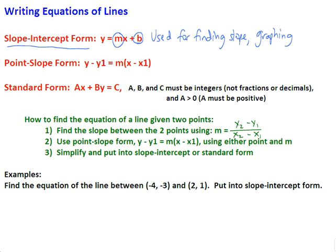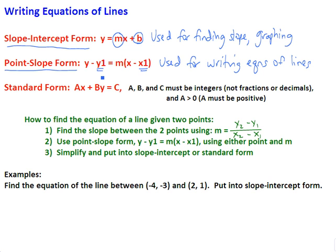The next form is the point-slope form. This one is probably a little less familiar, but it's also very useful. We're going to use this mainly when we want to write the equation of a line. The way it works is you will be given a point, which is x1, y1, and a slope m. You'll substitute those three values in, leave y as y, leave x as x, and then simplify to get the equation of the line.